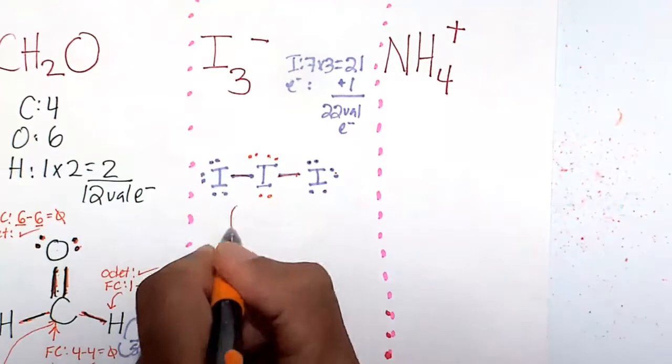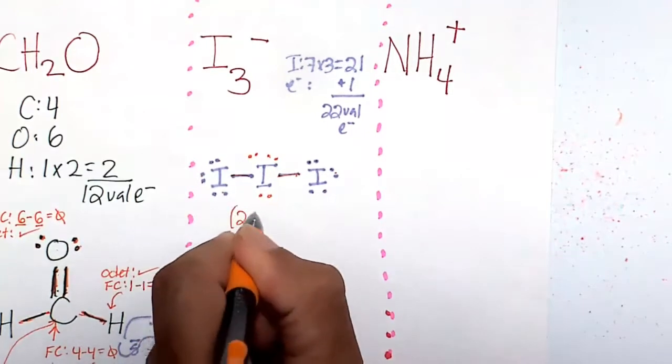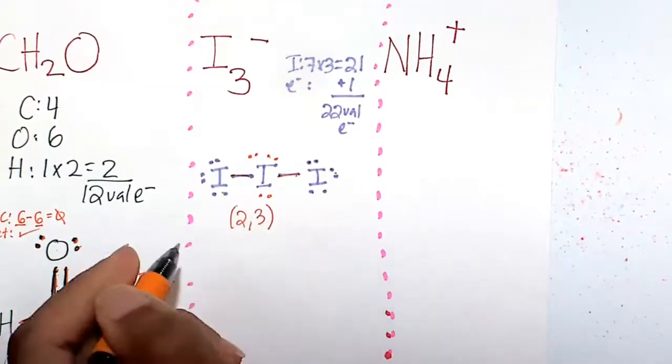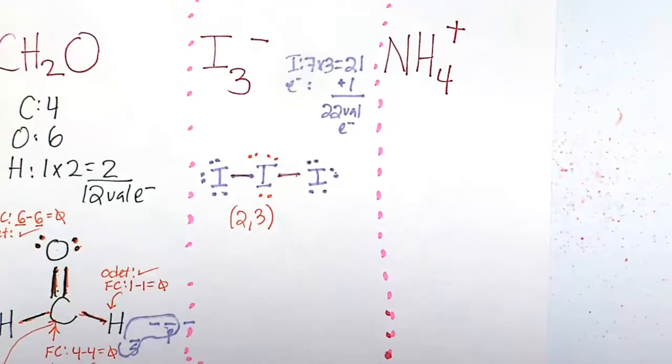So it's going to be two bonds and three lone pairs, two bonds and three lone pairs of the molecule of I3-.